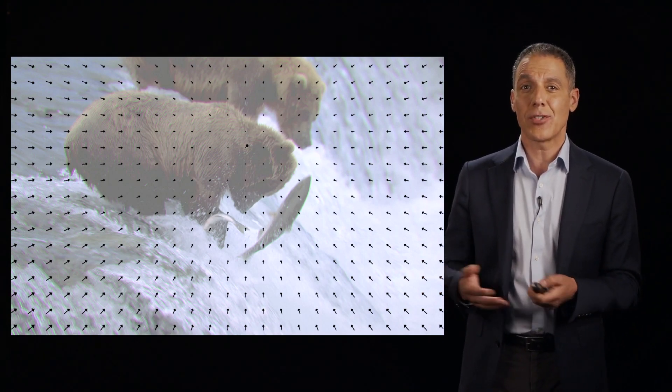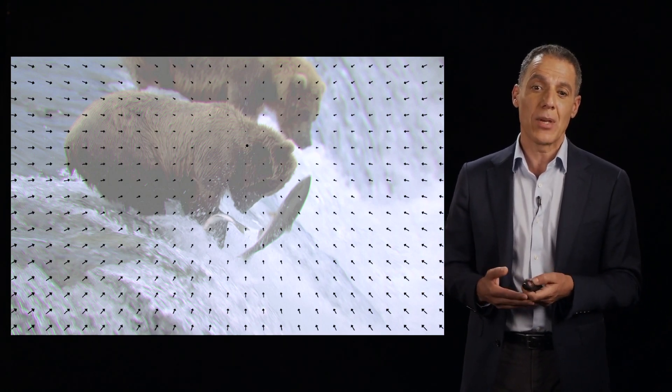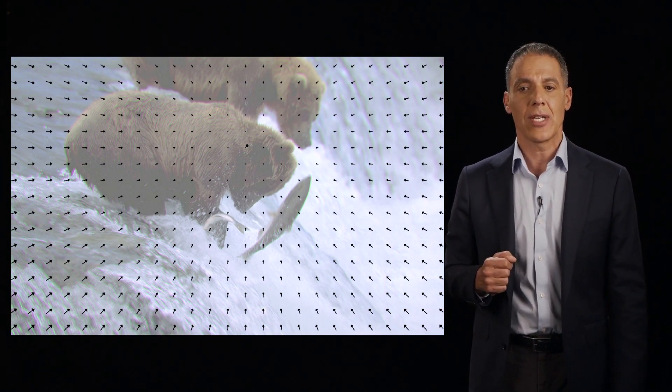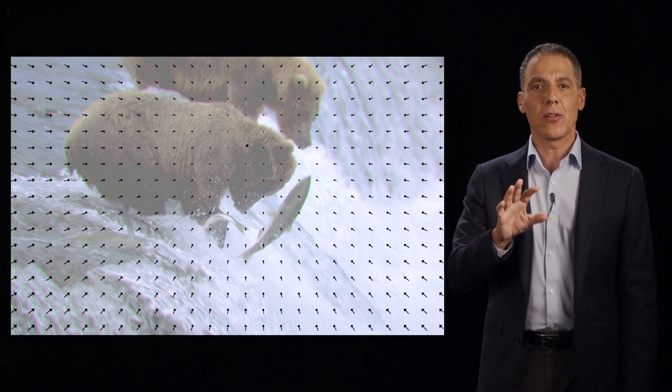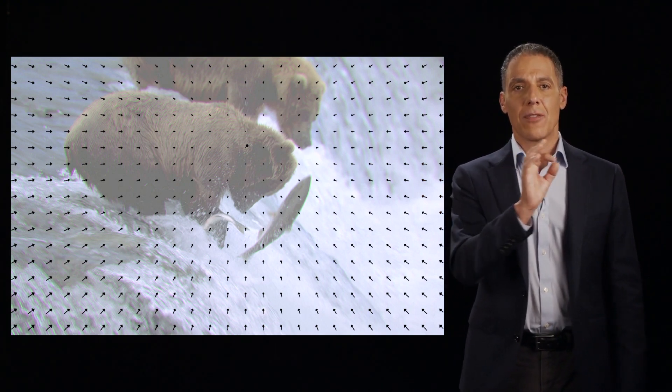Now, what's cool about these chromatic aberrations is that they're actually pretty understandable. In fact, you can model them with a pretty simple distortion across the color channels. And in particular, what I'm showing you here is a vector field of the displacement of the red channel relative to the green channel.